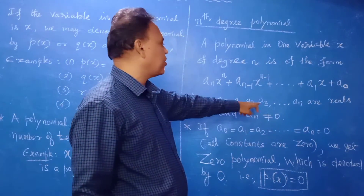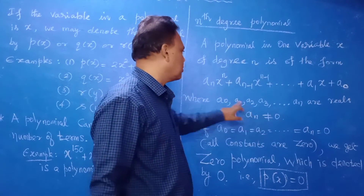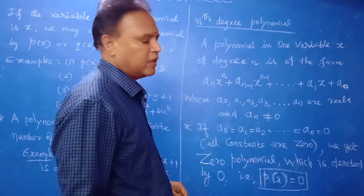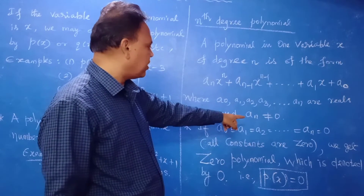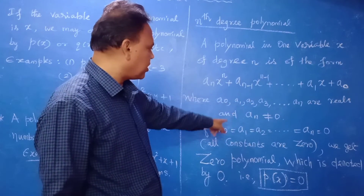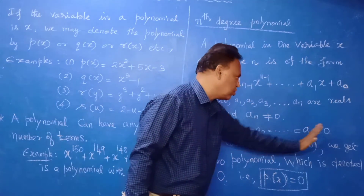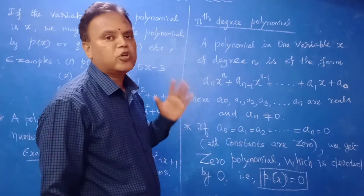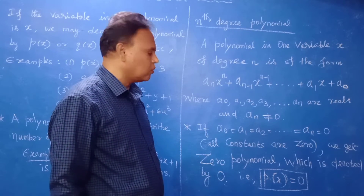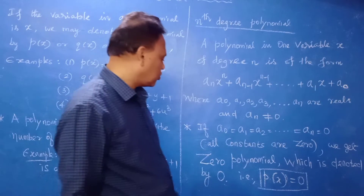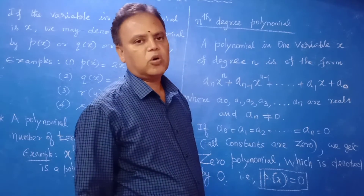Where a_0, a_1, a_2, ... a_n are all real numbers and a_n is not equal to 0 — only then do we get an nth degree polynomial. If all constants equal zero, we get the zero polynomial, denoted p(x) = 0.